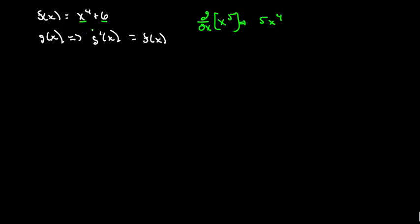Five times what we want here. So let's just multiply both sides by one fifth. Then this side becomes x to the fourth, which is what we want.